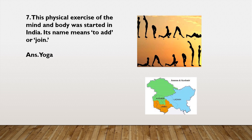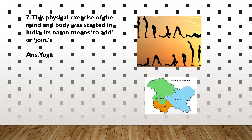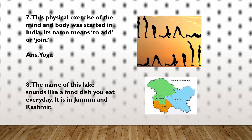Now, see this picture. This is Jammu Kashmir. Now it is a Union Territory. Kashmir is called the Venice of the East. It has 28 districts. The Jhelum River is the only major river which flows through the Kashmir Valley. The language spoken here is Urdu and Kashmiri. The state is mainly divided into three regions — namely Jammu, Kashmir, and Ladakh. Kashmir is mainly inhabited by Muslims, Jammu by Hindus, and Ladakh by Buddhists. The state animal is Hangul, that is Kashmir Stag, and the bird is Nectarine. State flower is Lotus and state tree is Chinar. The name of this lake sounds like a food dish you eat every day — it is in Jammu and Kashmir. It is Dal Lake.